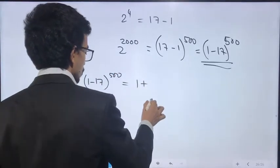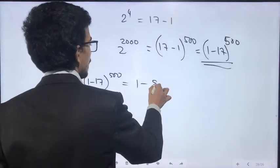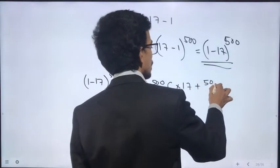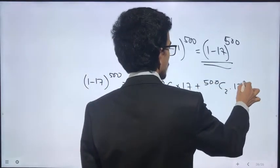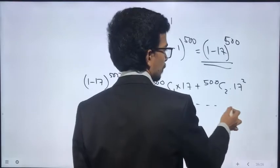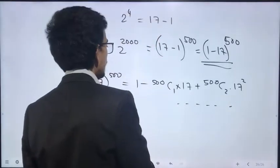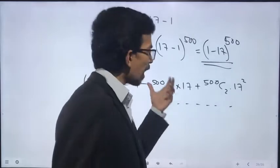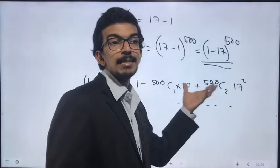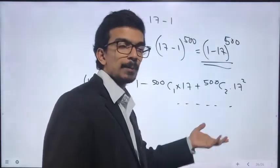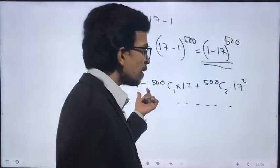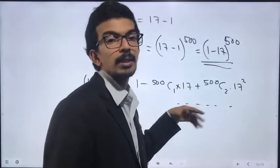1 minus (500C1 × 17 + 500C2 × 17^2). The first term is 1.